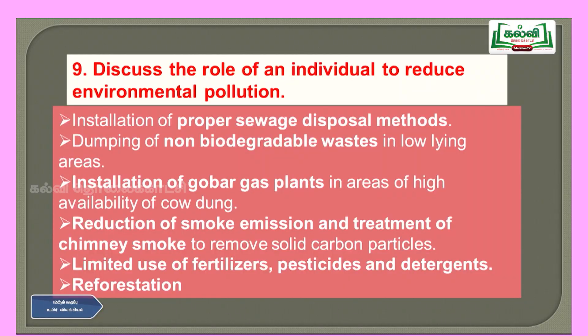Ninth question: discuss the role of an individual in reducing environmental pollution. Individuals can contribute through installation of proper sewage disposal methods, dumping of non-degradable waste in low-lying areas, installation of biogas plants in areas of high availability, reduction of smoke emission, treatment of chimney smoke to remove solid carbon particles, limited use of fertilizers, pesticides and detergents, and reforestation. These are methods by which we can reduce environmental pollution. All the best for your final examinations — read well and get good marks.